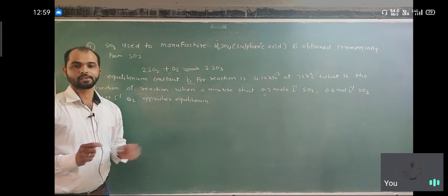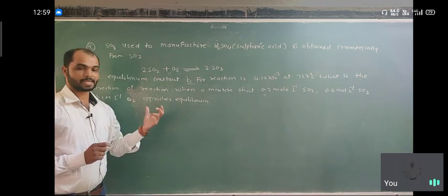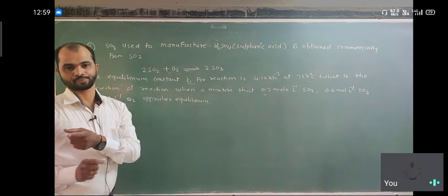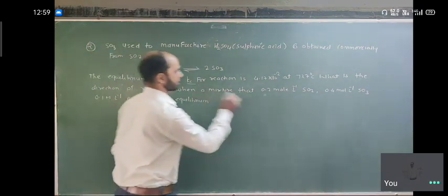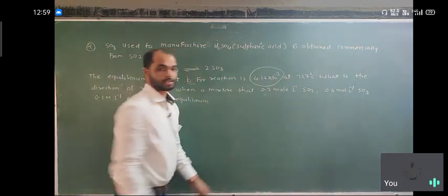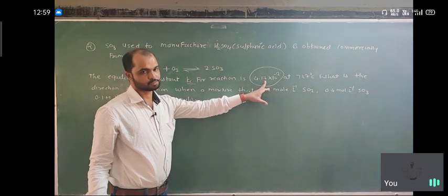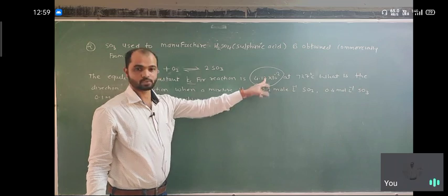So, you know already if we want to calculate the direction, we want to know the direction. First of all, we measure the Q. We measure Q and compare with this Kc value, this value. If Q is greater than this one, reaction is backward. If Q is less than this one, reaction is forward.